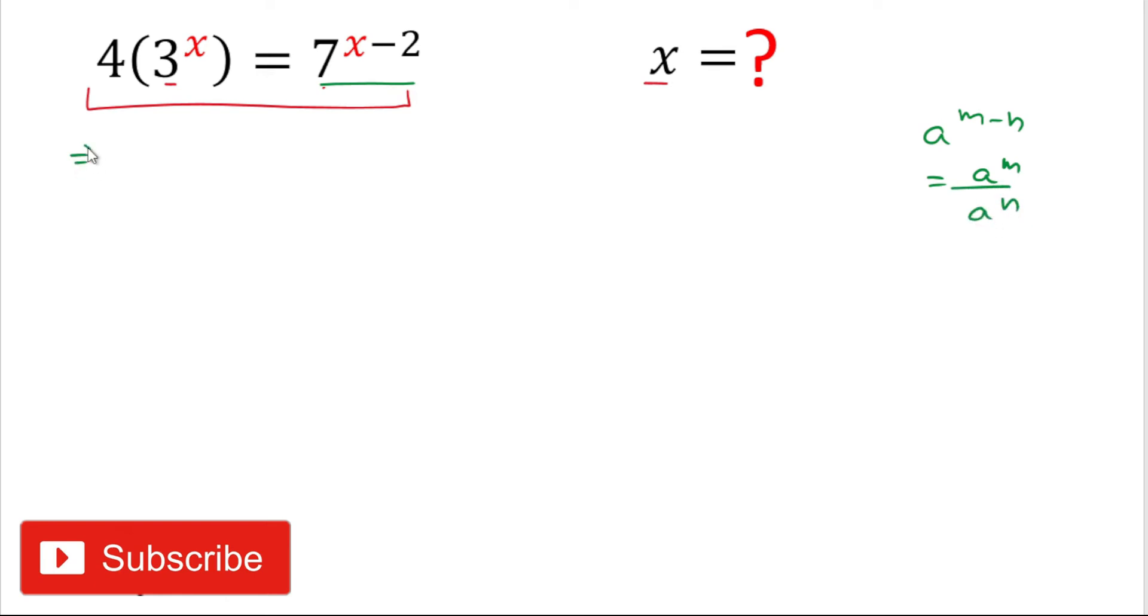Therefore we'll write 4 times 3 to the power x. In the right hand side we can write 7 to the power x divided by 7 squared, and it becomes 4 times 3 to the power x equals 7 to the power x.